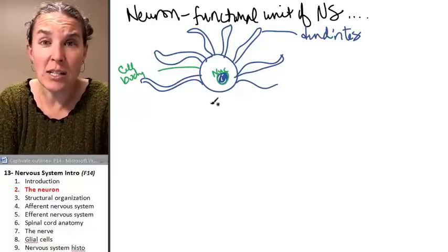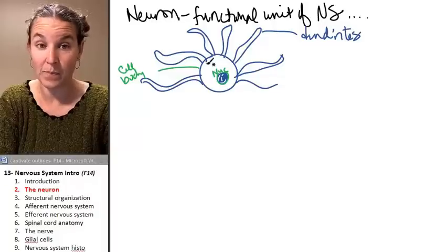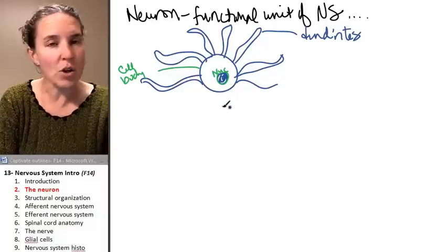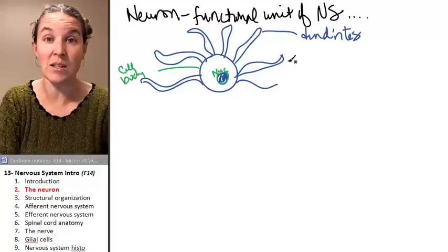So when I draw dendrites, they're going to look like little hairs coming out of this cute little head of the neuron. But don't be confused because they're not hairs. They're extensions of the cell themselves.